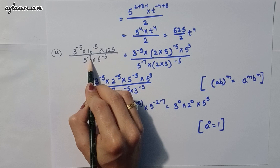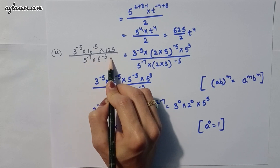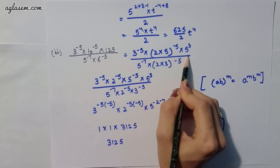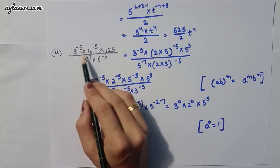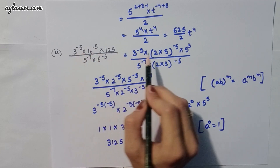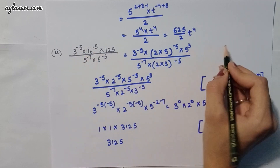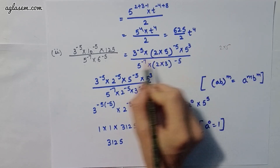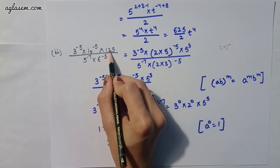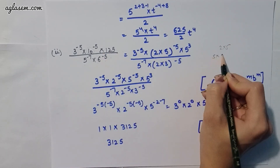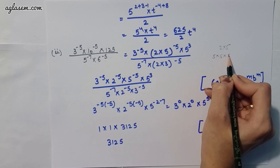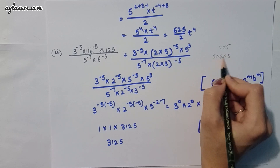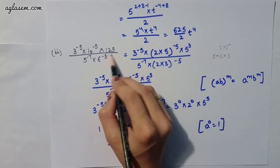Moving to the second part: 3^(-5) × 10^(-5) × 125 divided by 5^(-7) × 6^(-5). We write 10 as 2 × 5 and 125 as 5^3, then apply exponent rules to simplify the expression.